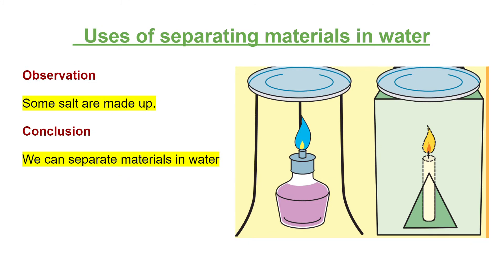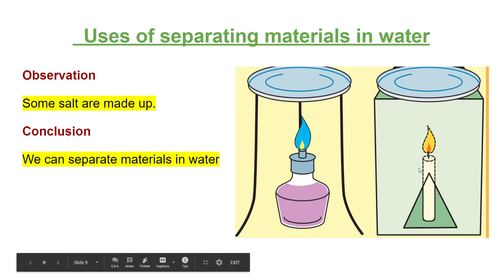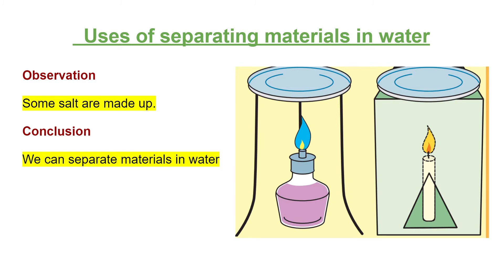The next topic is uses of separating materials in water. For this activity you will need: common salt solution, a spirit lamp, a tripod, and a lid of a tin. Arrange the practical as shown. Put some common salt solution onto the lid and heat it as shown in the figure. Use a tripod and a spirit lamp or an empty milk powder box with a ventilator and a lighted candle to heat it. Record your observations.